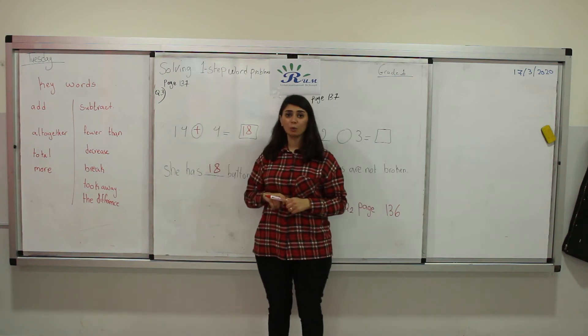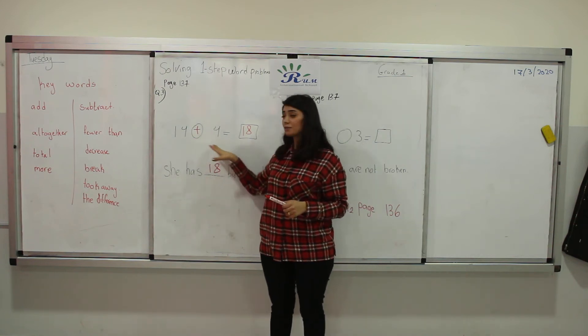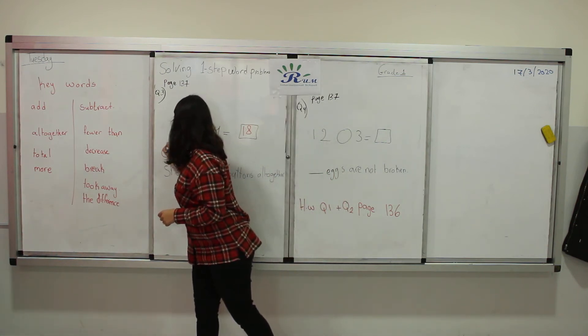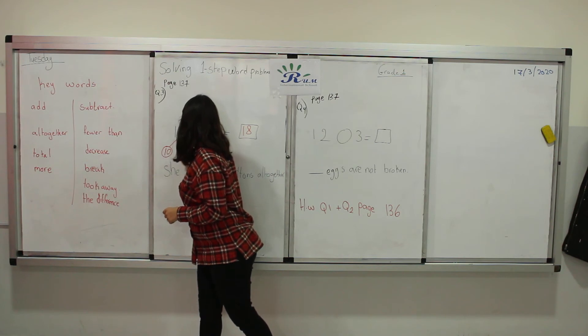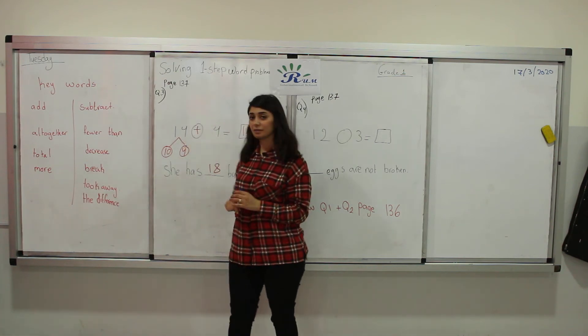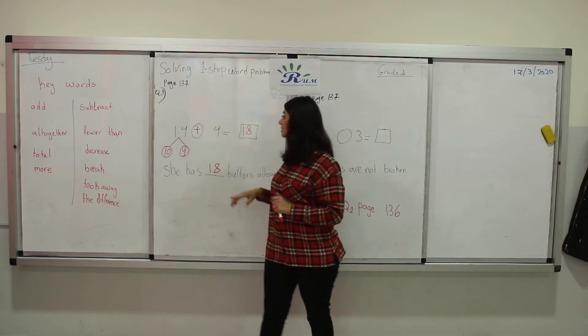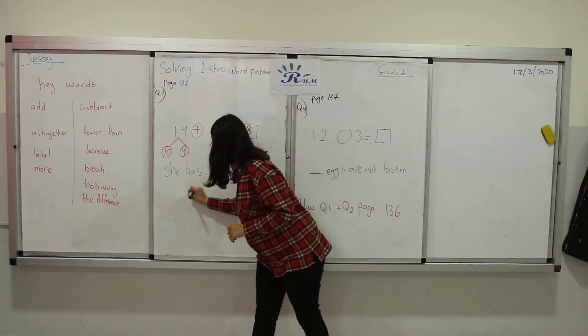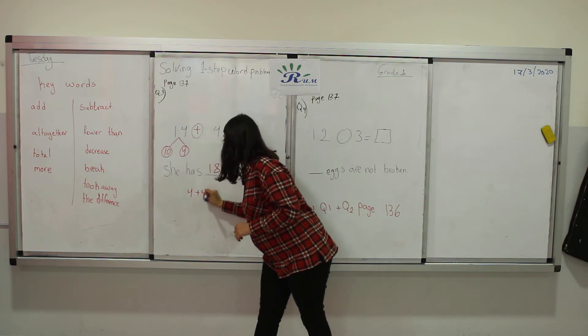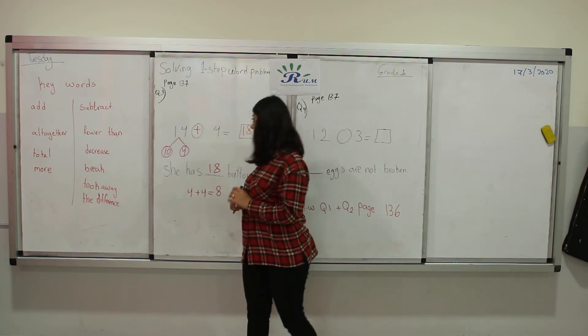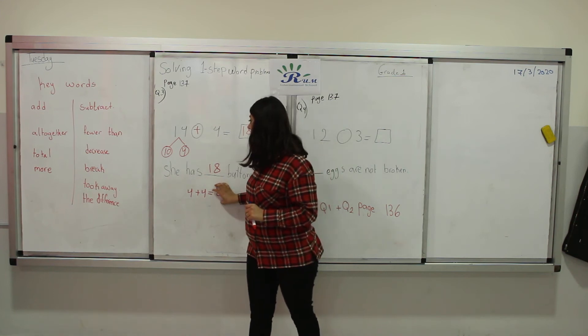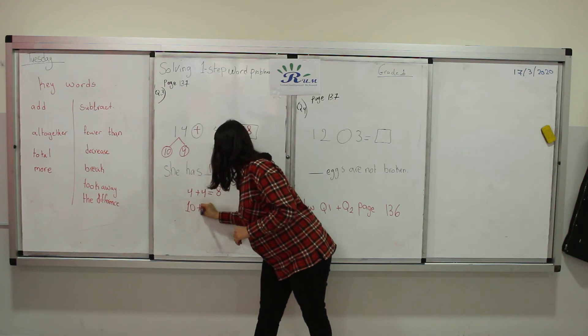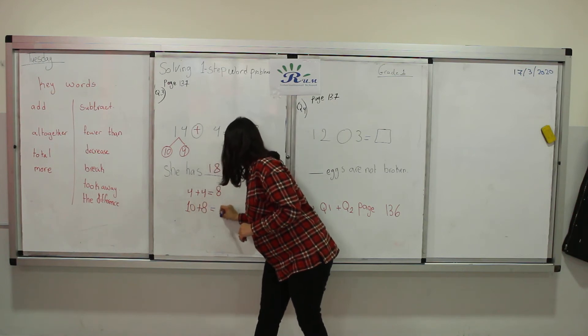Or we can add the ones first, which is here. We have to coordinate. 14 into 1 ten, 4 ones. And just add the ones first, which is 4 plus 4 is equal to 8. And then add this answer to the tens here, which is 10 plus 8 equals 18.